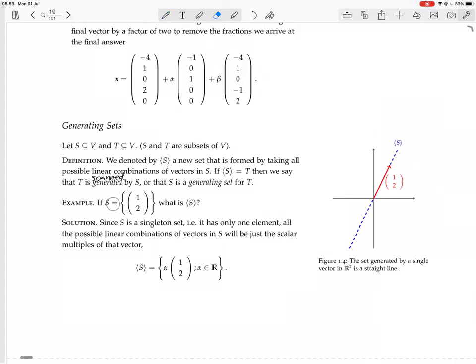Now, here's an example. If S is the set containing just the vector (1,2), that's a vector in R², what is the set generated by S? Well, since S is a singleton set, it only has one element, all the possible linear combinations of vectors in S will just be the scalar multiples of that vector. So, the set generated by S will be all those vectors of the form alpha times the vector (1,2), such that alpha is any real number.